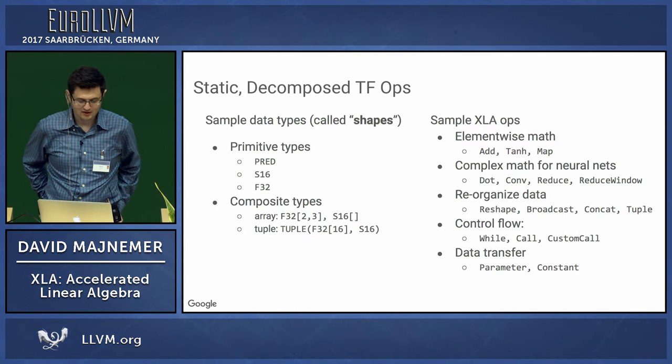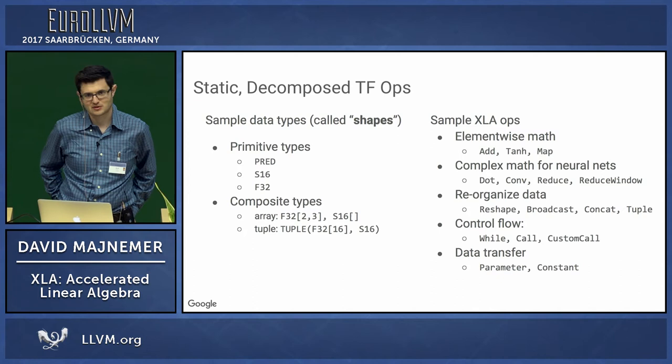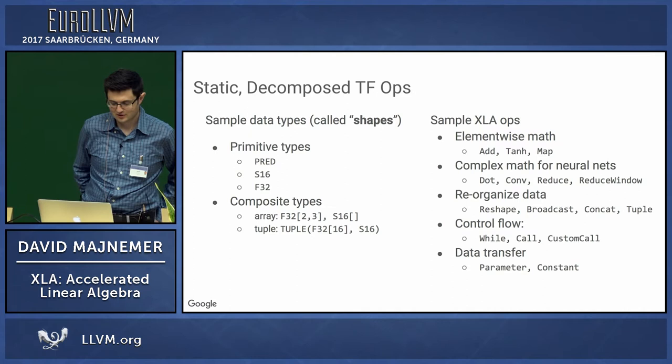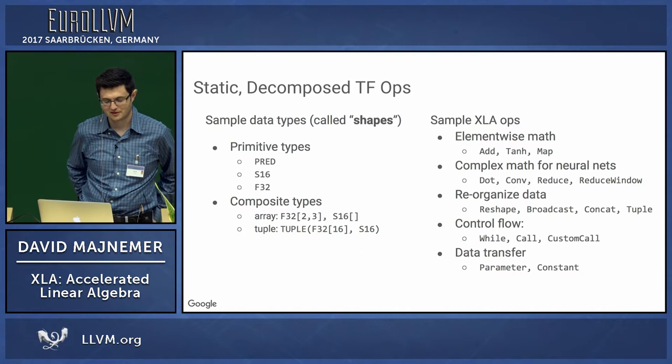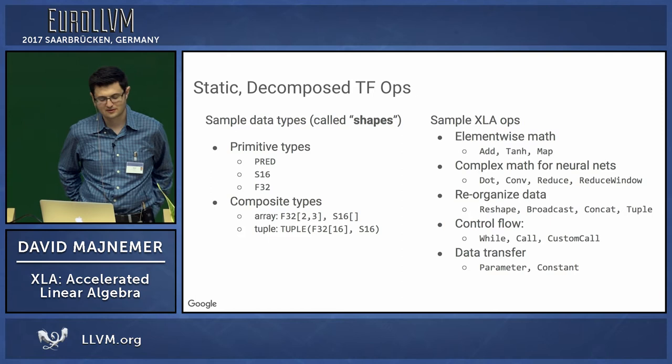XLA supports element-wise operations like add and map, more complex operations like convolution, matrix multiplication, and windowed reduces. We can reorganize data through broadcasting, reshaping, slicing, and concatenation. We support control flow constructs like while nodes, which run a computation until another computation signals completion. We can call computations and even call custom code for operations that can't be reasonably expressed inside XLA. We also have parameters and constants.